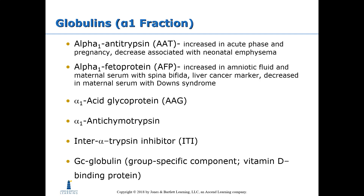The globulins are broken down into several different fractions. The alpha-1 fraction includes alpha-1 antitrypsin, which is increased in acute phase and in pregnancy, and decreased in neonatal emphysema. Alpha-1 fetoprotein is increased in amniotic fluid and in the maternal serum of women pregnant with babies that have neural tube disorders such as spina bifida. It is also a liver cancer marker, and it is decreased in maternal serum of women pregnant with Down syndrome babies.